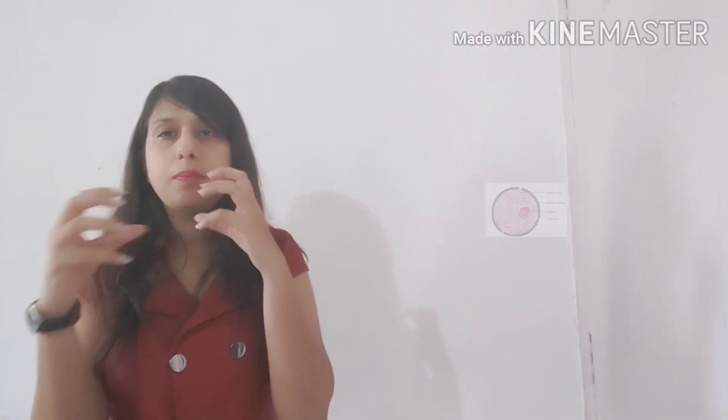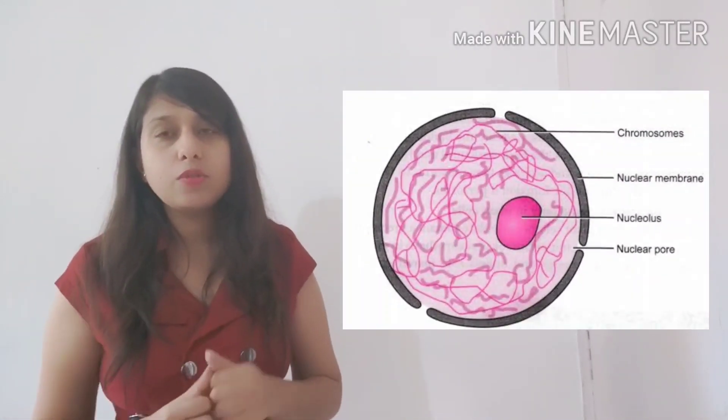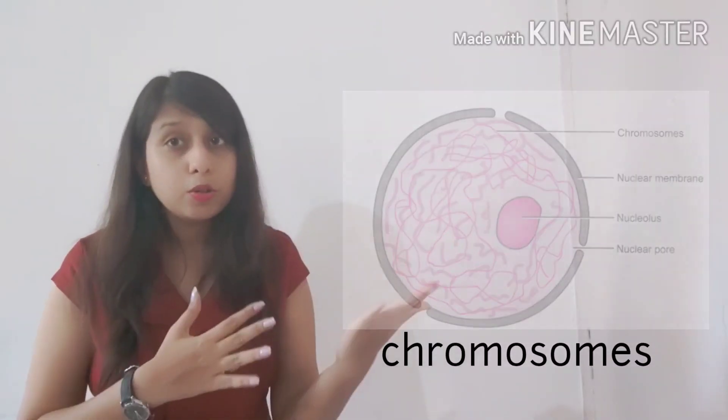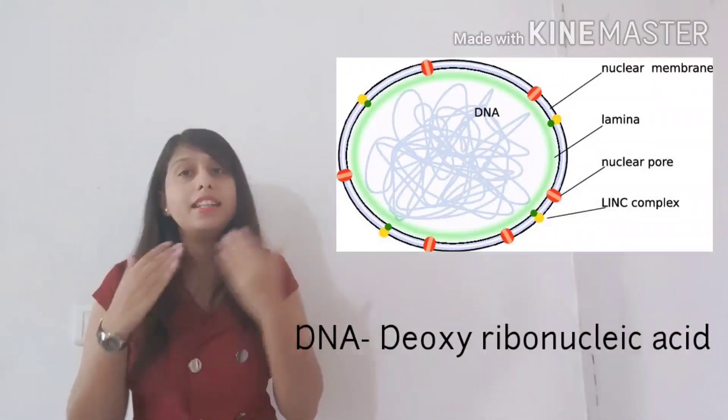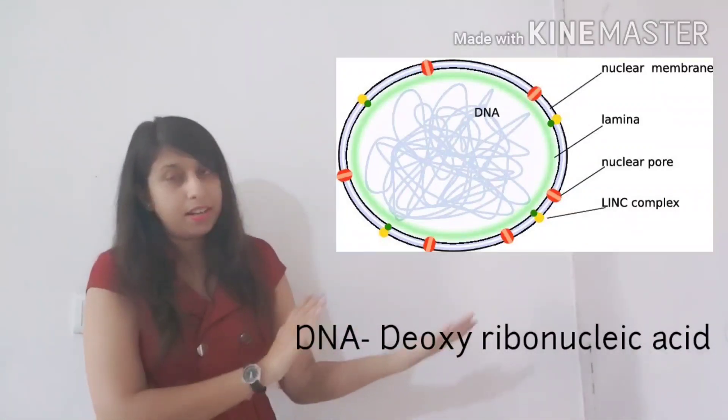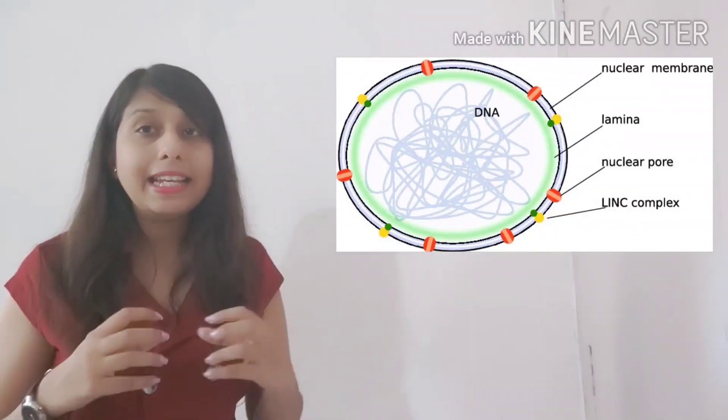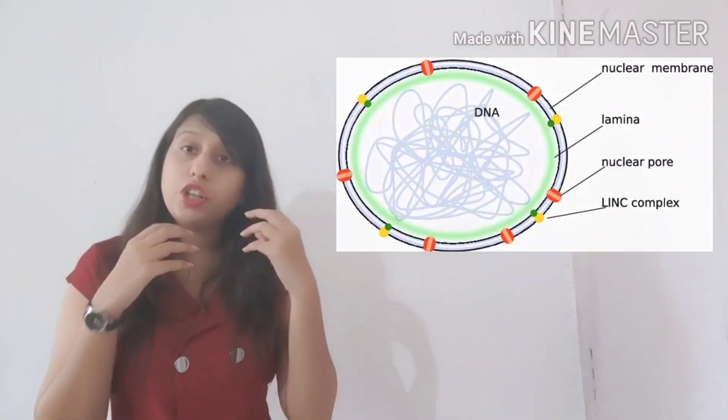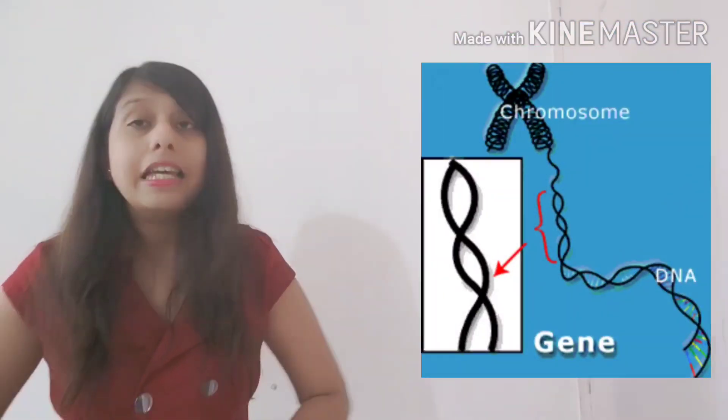So now what does this nucleus mainly contain? Nucleus mainly contains thin network-like structures which are known as chromosomes. These thread-like structures, chromosomes, are what you can say made up of DNA. Now what is DNA? It is deoxyribonucleic acid which is mainly the basis of the genetic material.